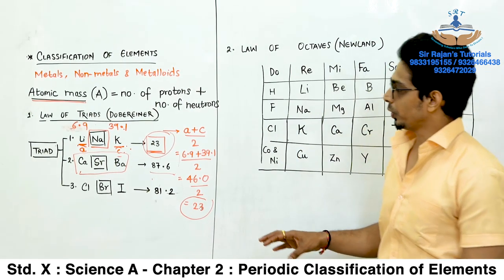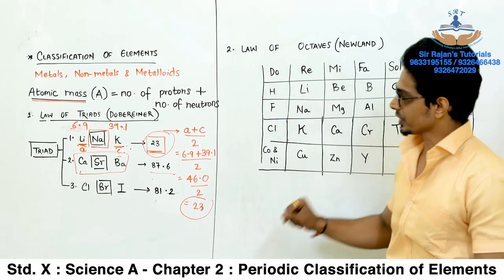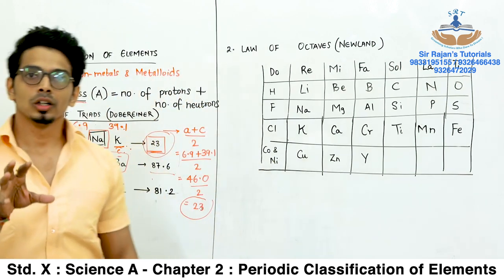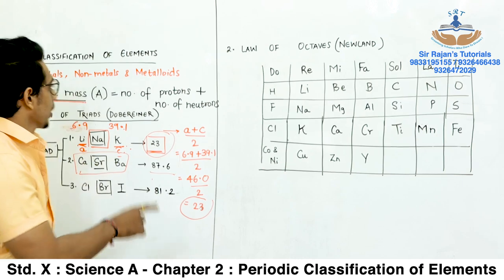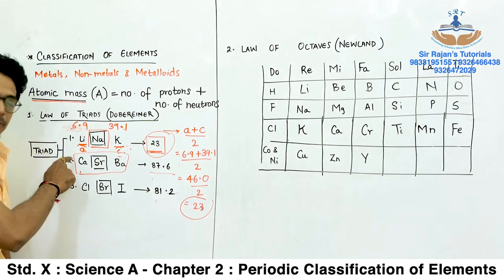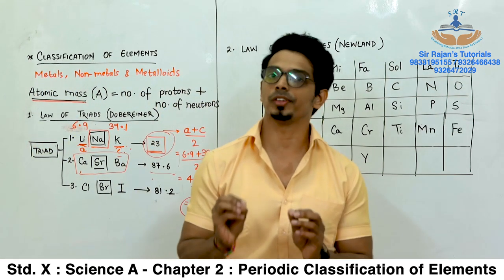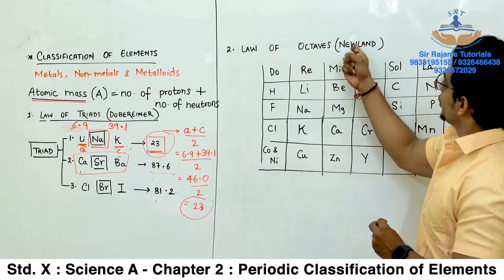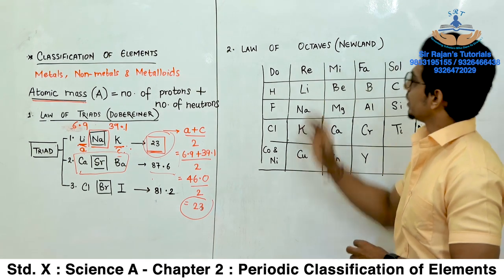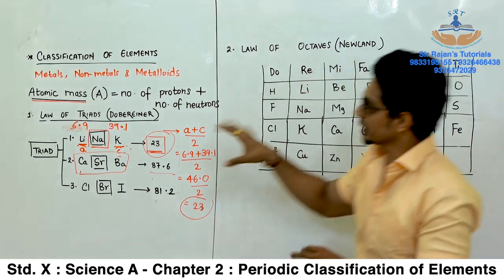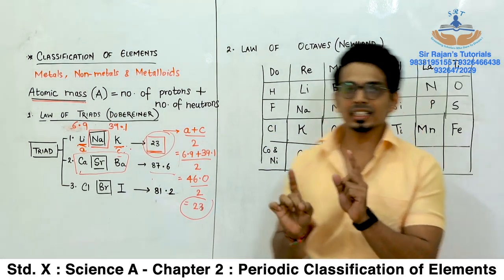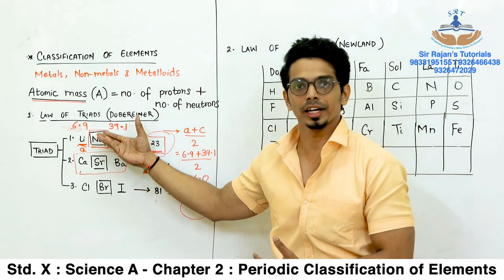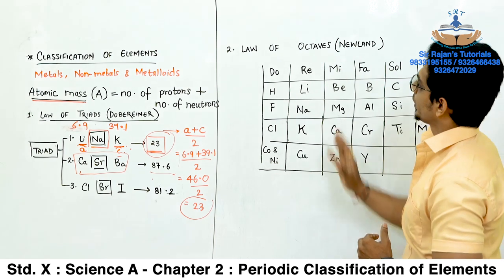When Newlands arranged elements in increasing atomic mass, he found that the properties of some elements were the same — both physical and chemical properties. He placed Hydrogen, then Lithium, Beryllium, Boron, Carbon, Nitrogen, Oxygen. When he came to Fluorine, he realized that Fluorine had properties similar to Hydrogen, so he placed Fluorine neighboring or below Hydrogen. Then Sodium, whose atomic mass was higher than Fluorine, showed properties similar to Lithium, so he placed Sodium below Lithium. He continued until Thorium, making a table of 56 elements in a 7 by 8 arrangement.